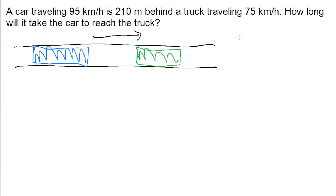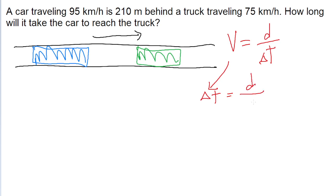There are a couple of different ways we can solve this, but let's start by reminding ourselves of the speed equation. Speed is equal to distance traveled divided by the time interval. Since we're trying to solve for the time interval, we algebraically solve for delta t by multiplying both sides by delta t and dividing both sides by v. So delta t equals distance traveled divided by average speed. Even though both vehicles travel different distances, they still have the same time interval.